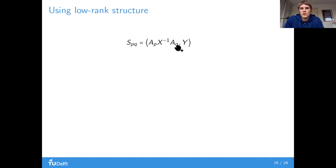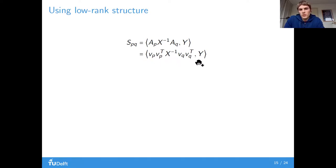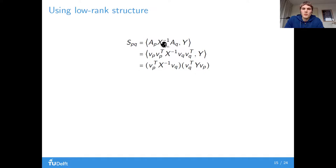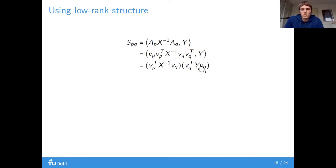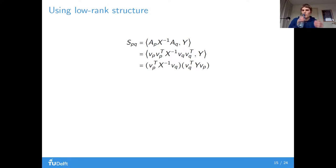Secondly, we have the low-rank structure of the matrices. As the simplest example, we have just a vector times vector-transpose as a matrix. Because this is a trace inner product, we can cycle one of these vectors to the other side, and then we have just matrix-vector products. That is much faster than matrix-matrix products: the time complexity for a matrix-matrix product is cubic, whereas matrix-vector products are quadratic.